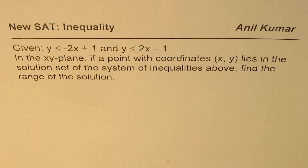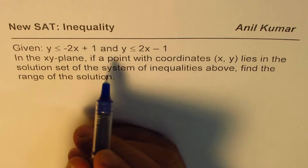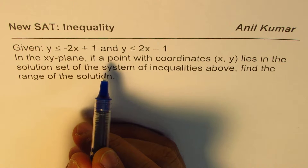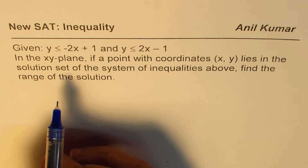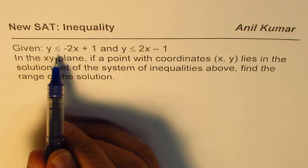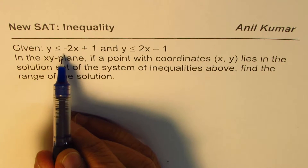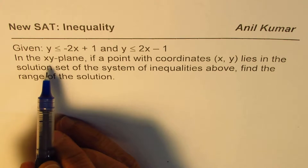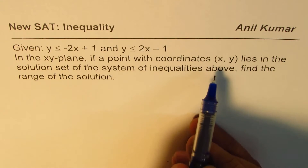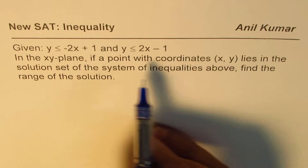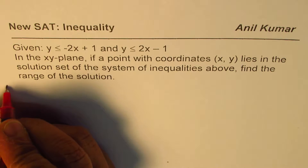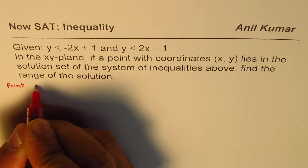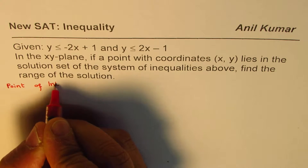For such questions you may not even be provided a graph paper, so you may have to make rough sketches. In both the inequalities we have 'less than or equal to,' which means we could have a point of intersection that is part of our solution. So let's find this point of intersection first — it's a good idea to start with that.